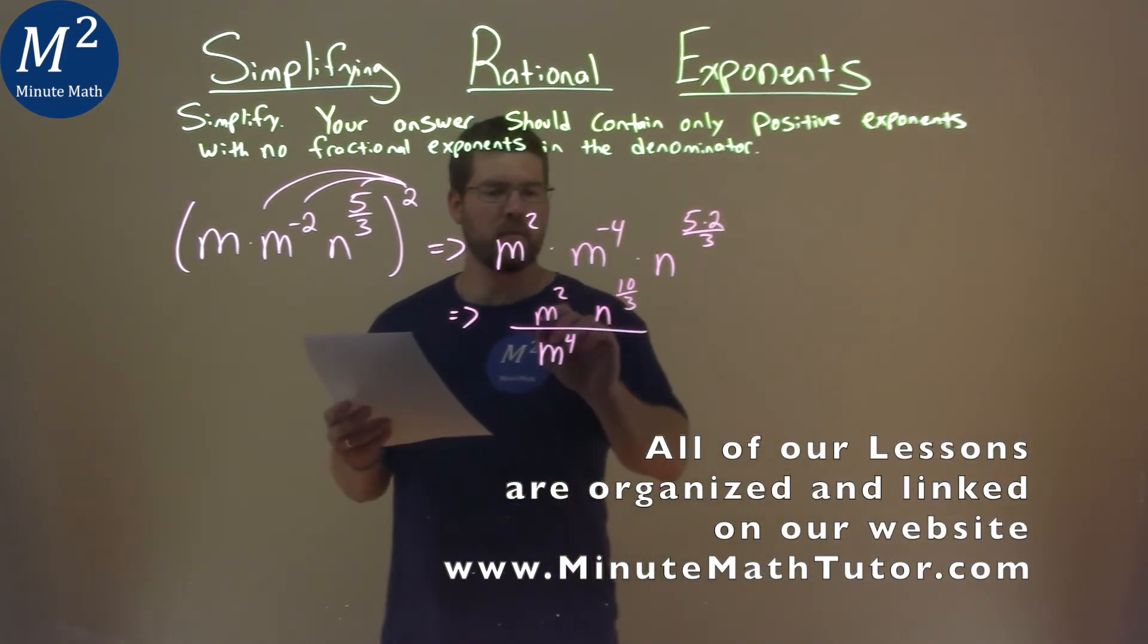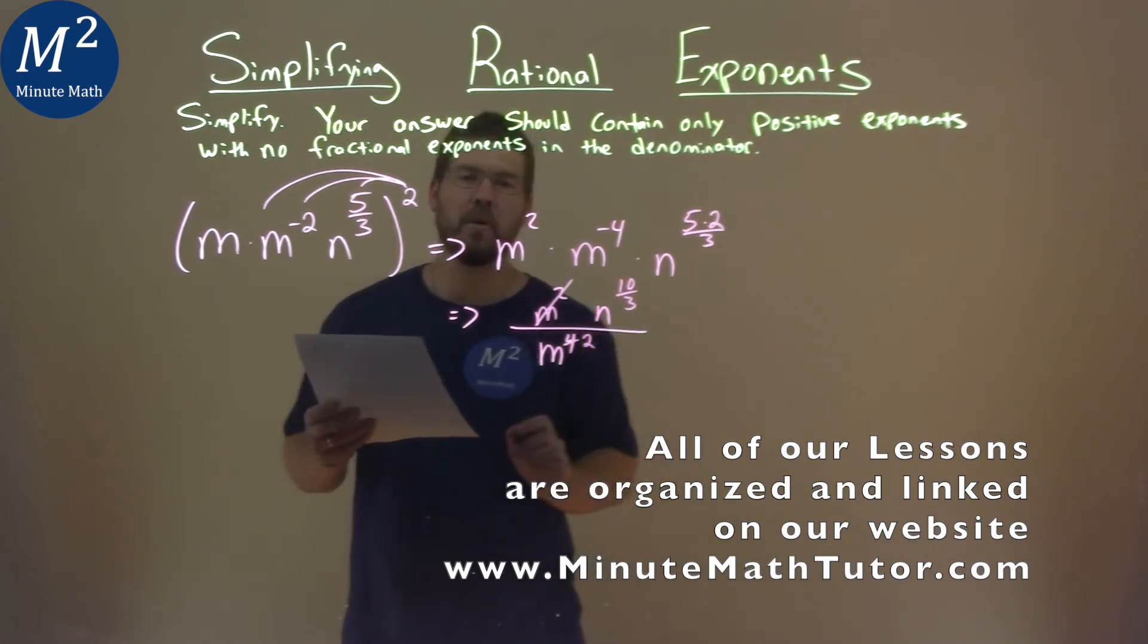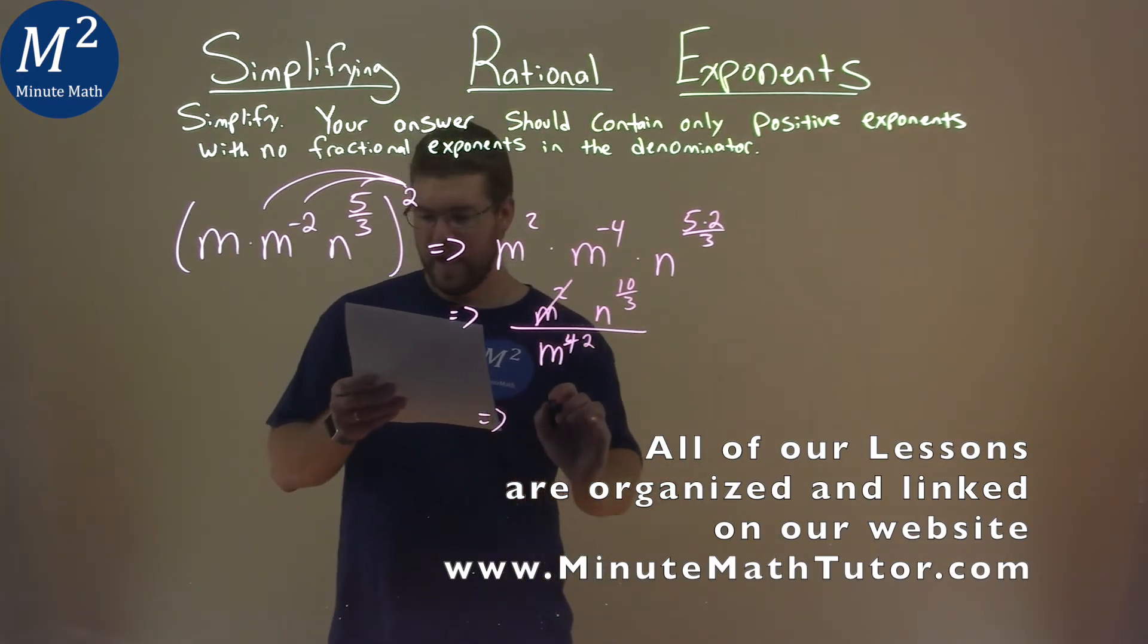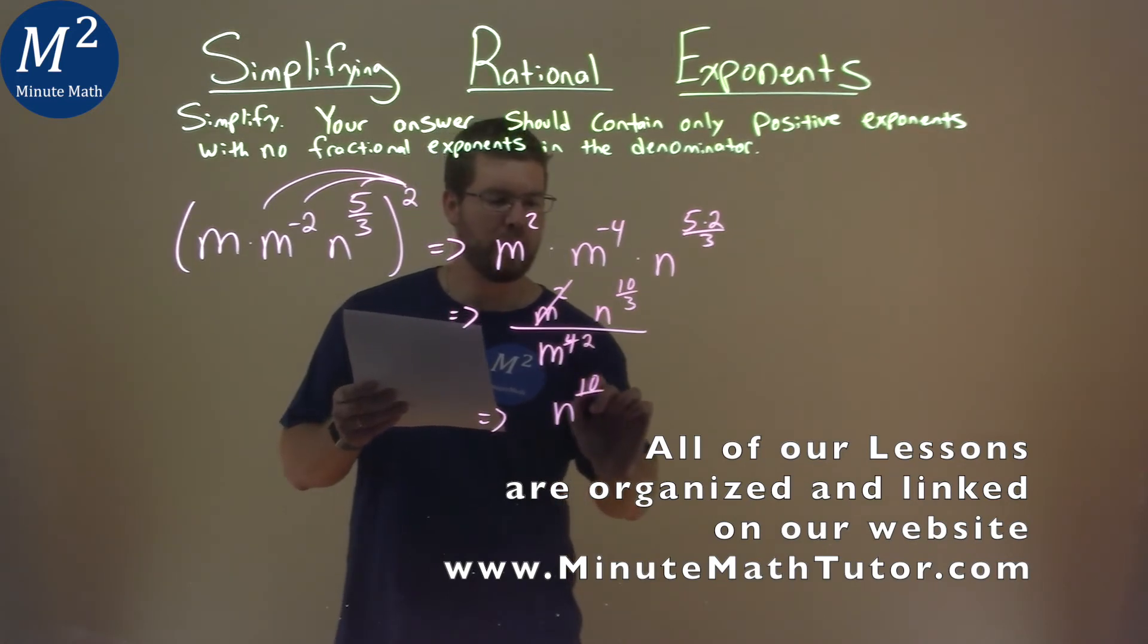Let's go simplify. m squared divided by m to the fourth, that cancels out and we just have m squared in the denominator. And so we have n to the ten-thirds power in the numerator.